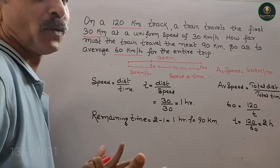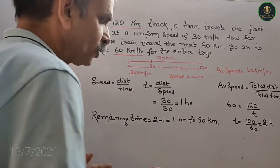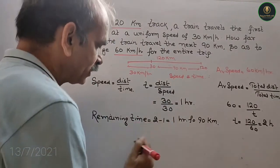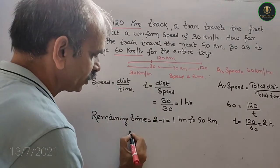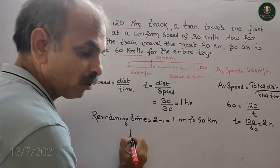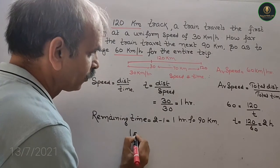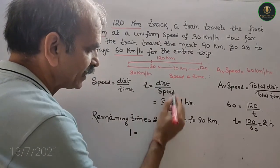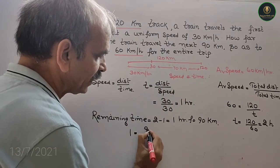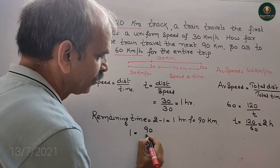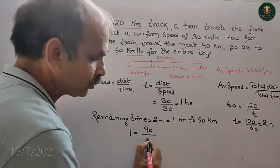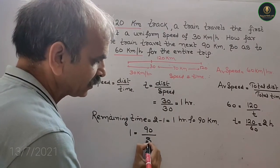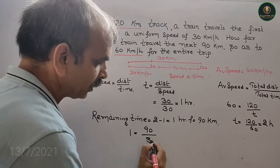So for the remaining 90 km, T is equal to 1 hour. Distance is 90 and the speed is suppose S.